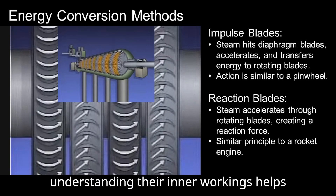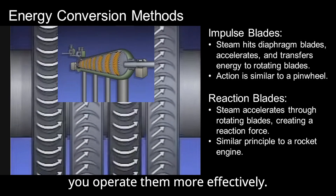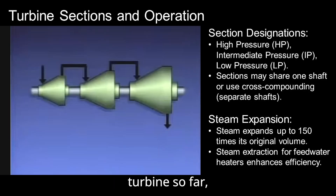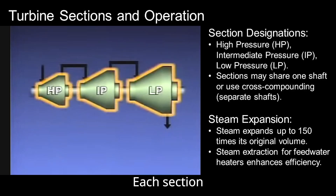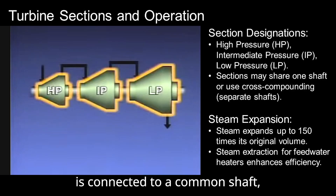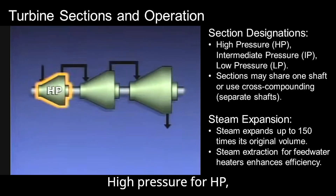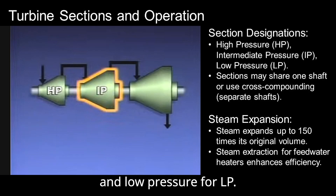While you may not be designing turbines, understanding their inner workings helps you operate them more effectively. Most large turbines are divided into sections, each connected to a common shaft, and each with a specific pressure designation: high pressure (HP), intermediate pressure (IP), and low pressure (LP).